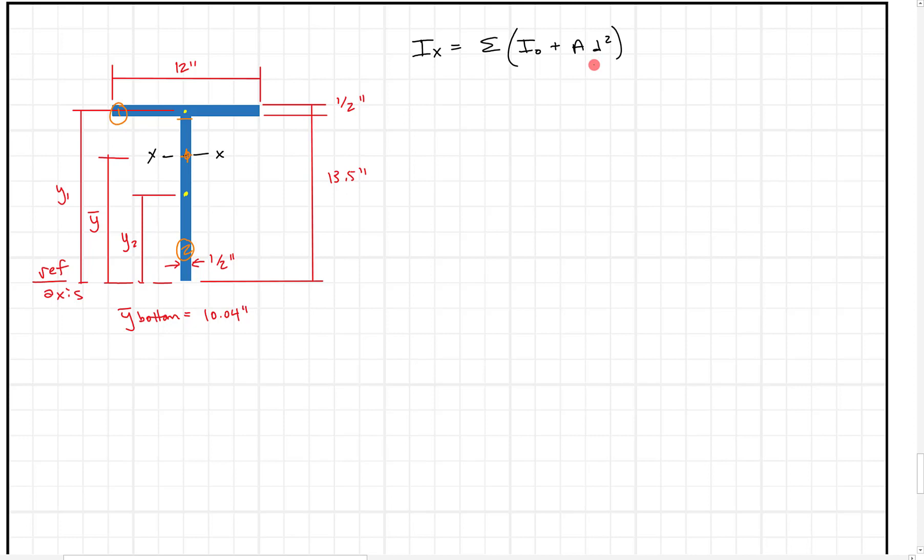Or the area times the distance away from the neutral axis squared. And so to do that, I like to use a table. So I'm just going to list like part one and part two. And we had identified those parts previously, but part one is just this top section that's 12 inches wide by half inch tall. Part two is going to be this web, this vertical section that's a half inch wide and 13 and a half inches tall. So to do that, what I want to do is first I'm going to go ahead and find I naught.